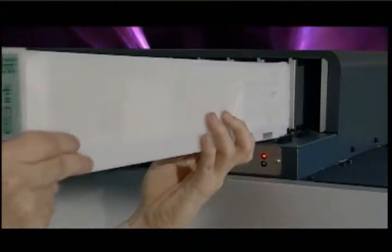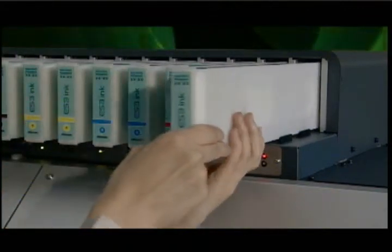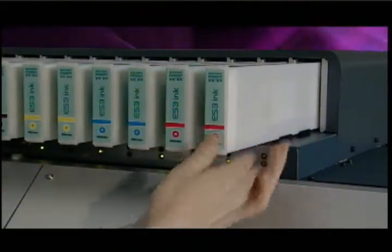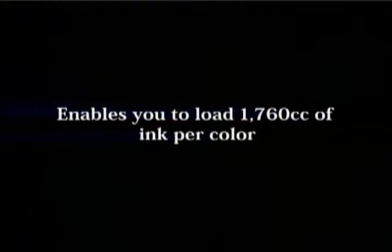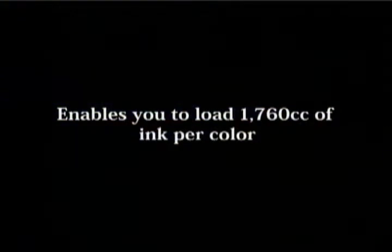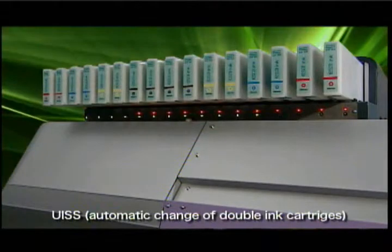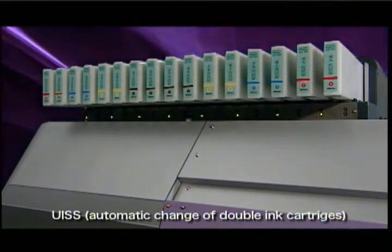The new ink system has two cartridges for each color. When one runs out, the JV-5 switches to the second cartridge automatically without suspending the printing operation. A maximum capacity of 1.76 liters of ink per color ensures sustained, consistent operation with no concerns about the ink running out.